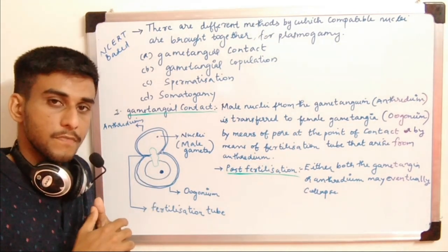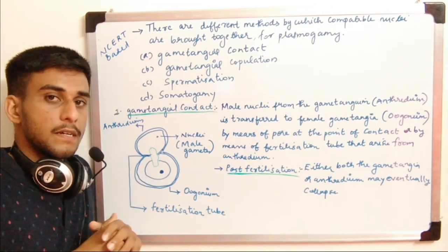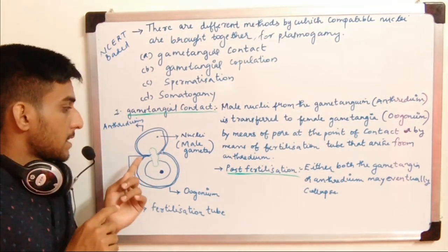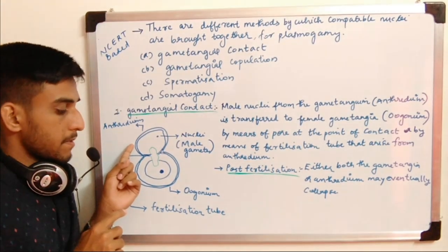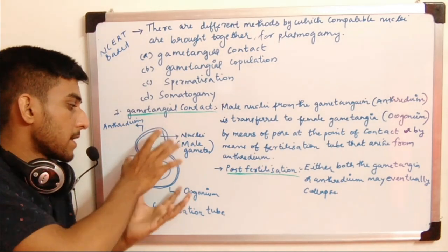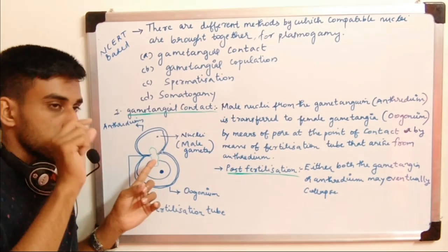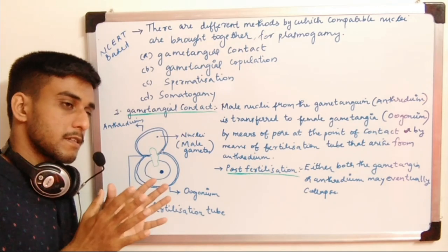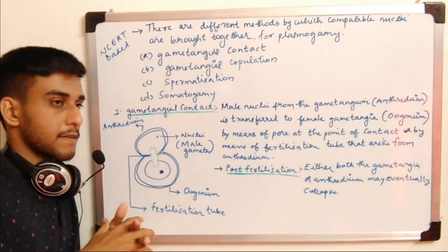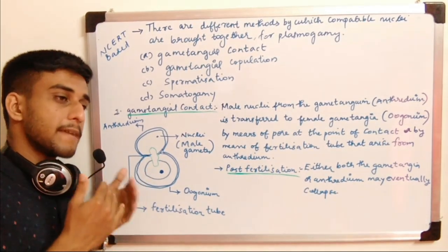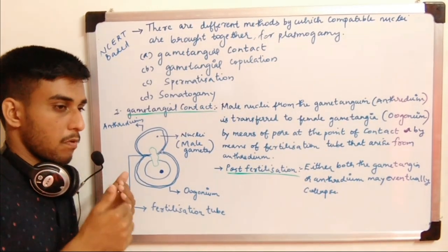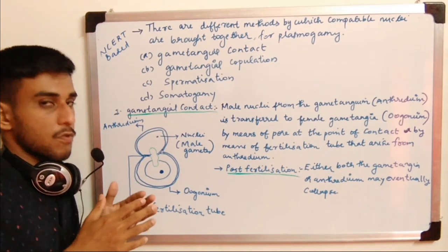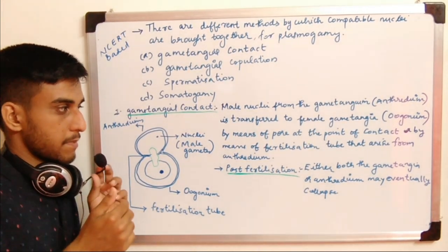The fertilization tube arises from the antheridium — the male gamete producing organ. In the diagram, the antheridium is the male gamete and the oogonium is the female gamete. At the point of contact, either there is a small hole — a pore — through which the male nucleus is transferred to the female gamete, or transfer occurs through a fertilization tube. The male nucleus is always transferred to the female gamete.